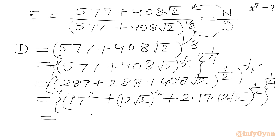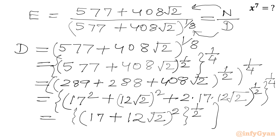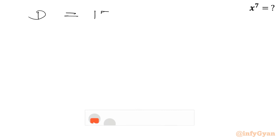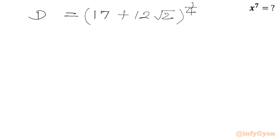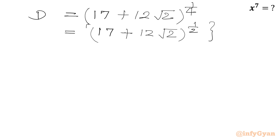This bracket is a perfect square of (17 plus 12 root 2). So I can write (17 plus 12 root 2) whole squared, then power half, then whole power 1 over 4. Now we cancel the square and the power half. It will be left with (17 plus 12 root 2) to the power 1 over 4. We can write this as (17 plus 12 root 2) to the power half, whole power 1 over 2, and half times half is 1 over 4.